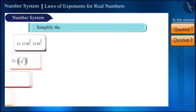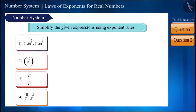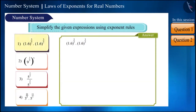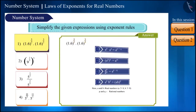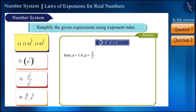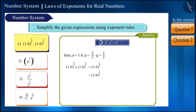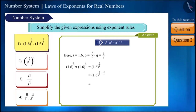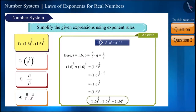Now let's simplify some questions using exponent rules. In this one the bases are the same and the exponents are different, so we use this exponential rule where a = 1.6, p = 5/2, and q = 3/2. It becomes 1.6 raised to the power 5/2 + 3/2, giving 1.6 raised to the power 8/2, which we can also write as 1.6 raised to the power 4.